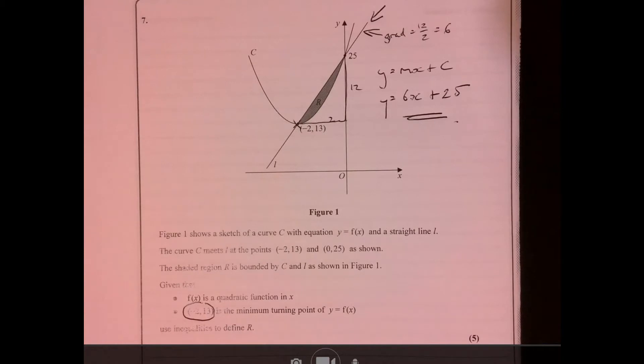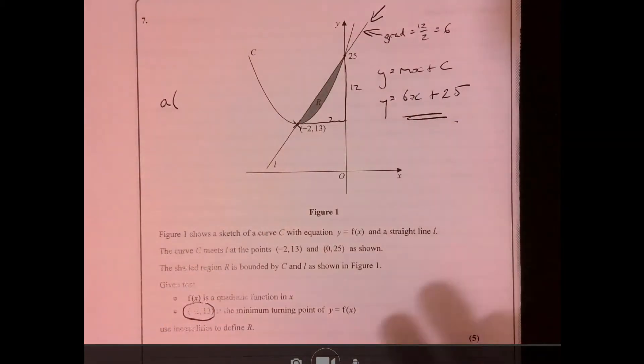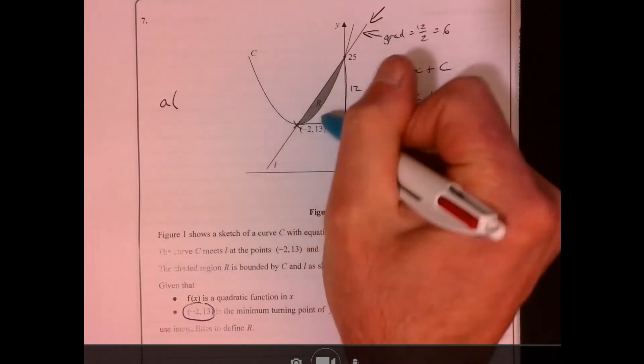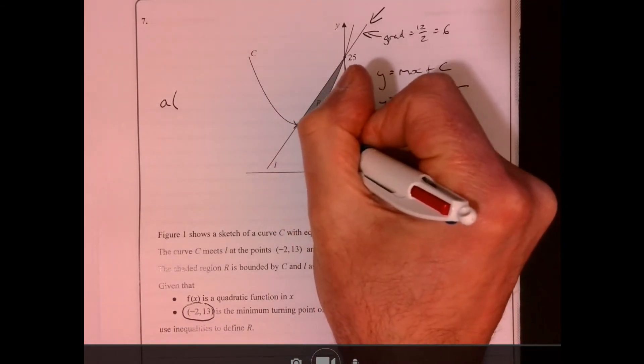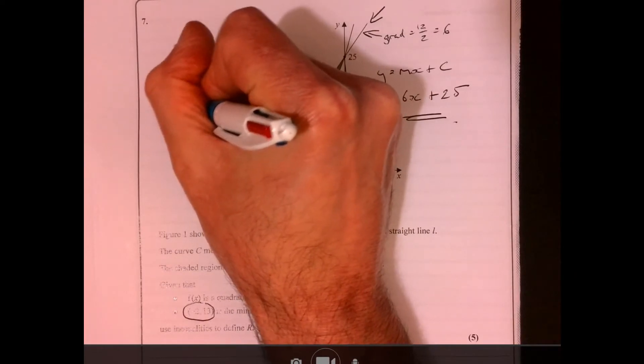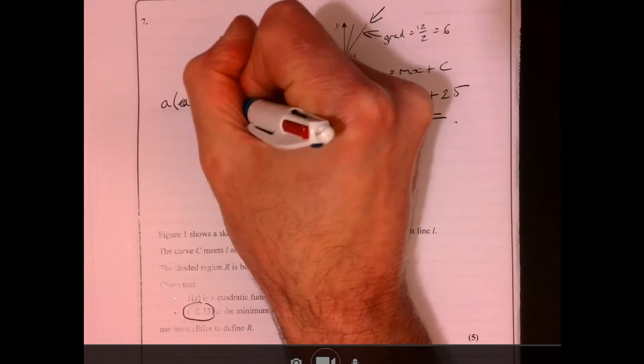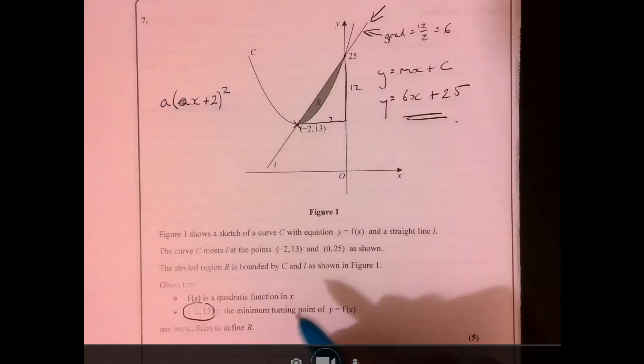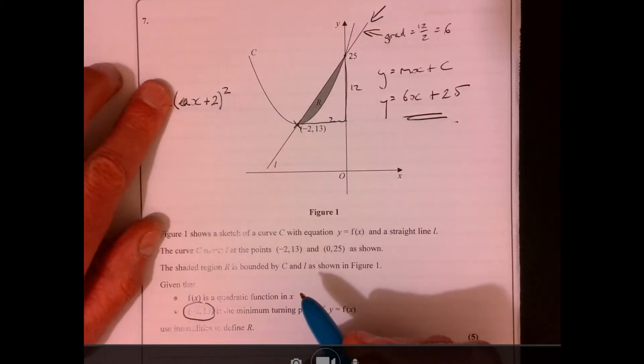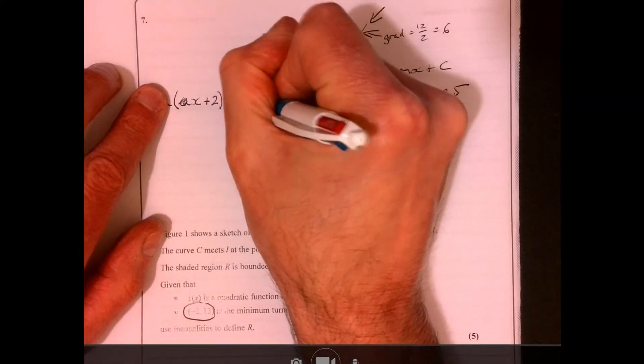So what we know then is that if you think about when we complete the square, you can identify the minimum point and you would have, so it's going to be a(x plus 2)². It must take this form, just forget about the a for a second at the beginning, and then plus 13.